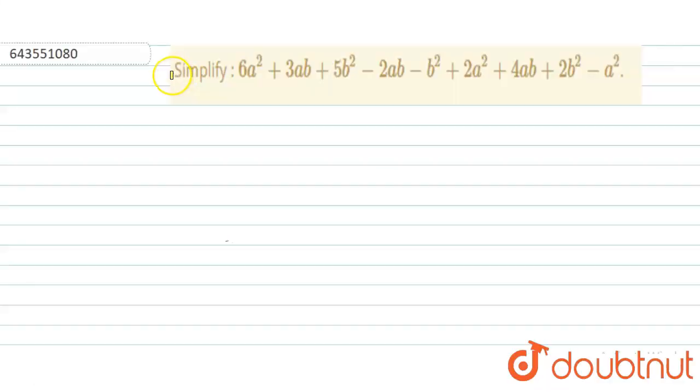Hello students, let us begin with the question. So the question says, simplify 6a² + 3ab + 5b² - 2ab - b² + 2a² + 4ab + 2b² - a². So let us begin. Before we start this, let us arrange this in a proper way.